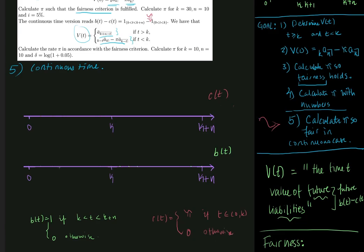So if I should draw this, I have c of t here at level pi and then I have b of t at level 1. So when I draw continuous payments, I draw them as lines instead of vertical lines. I draw them as long horizontal lines.